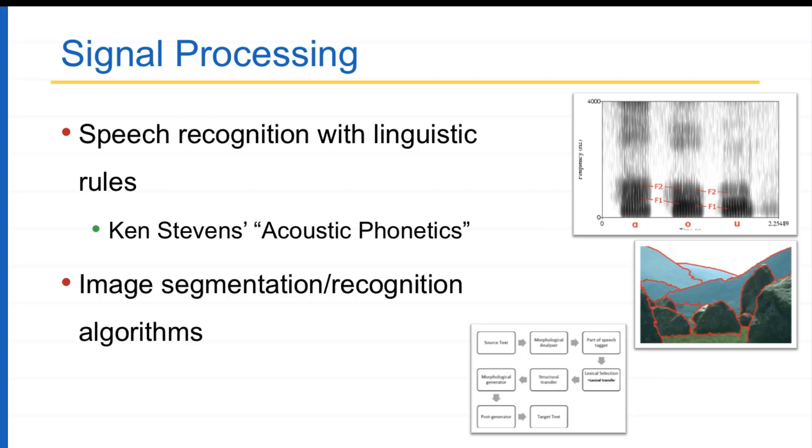Then you have image segmentation or image recognition algorithms. What is image segmentation? You have a picture and you want to segment. Where is the person? Where is the tree? Where is the hill? Where is the sky? Where is the grass? And you can do it automatically using handmade rules, which come from signal processing, which come from image processing. There were popular algorithms, how to extract good descriptors of the image, how to do segmentation in a very robust way.